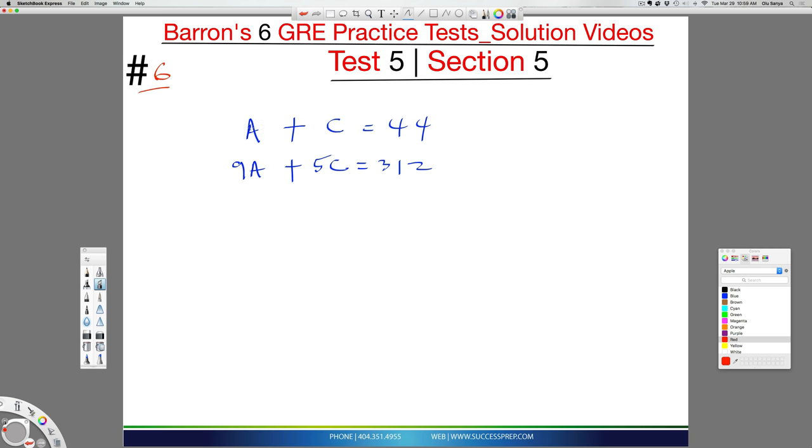Or you could use the elimination method in which you want to eliminate either the A or the C. Since the question wants you to find A, you want to eliminate C because you don't want C to be there. So how do I eliminate this C? C is 5C. There's a 5C here, but there's a C here. So it would be nice if this C could be a 5 as well and have a negative. So the way I do that is I just think about the whole thing. I multiply this by 5 there.